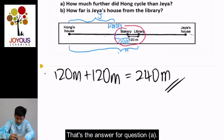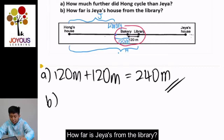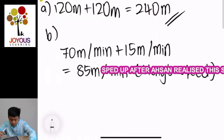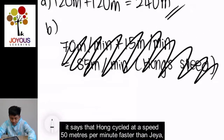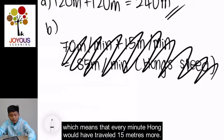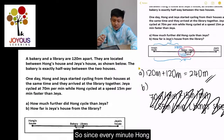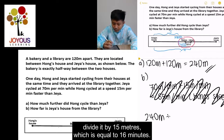Moving on to Question B: how far is Jaya's house from the library? It says Hong cycled at a speed 15 meters per minute faster than Jaya, which means every minute Hong would have traveled 15 meters more. In the previous question we found that Hong traveled 240 meters more. So we take 240 meters divided by 15 meters, which equals 16 minutes.